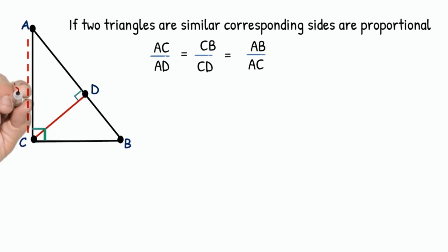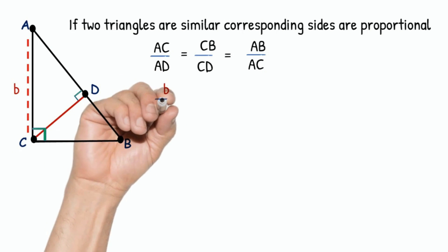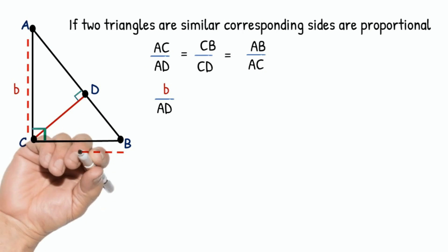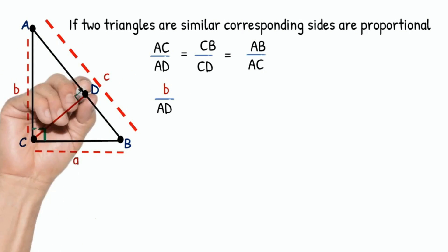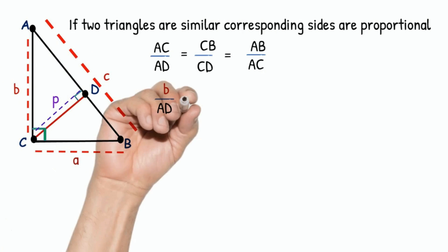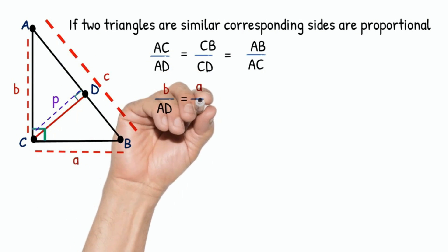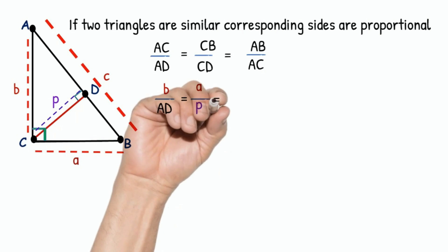Given that AC is B, CB is A, AB is C, and AD is P. So we can put the values in the ratios. B by AD equals A by P equals C by B.